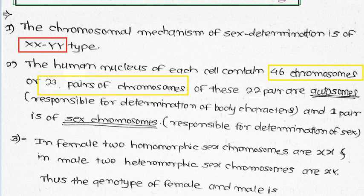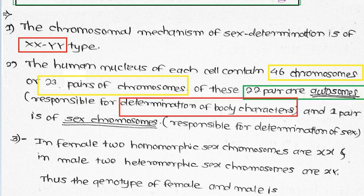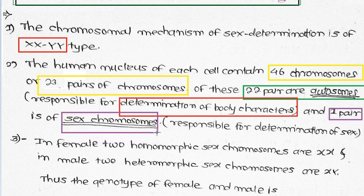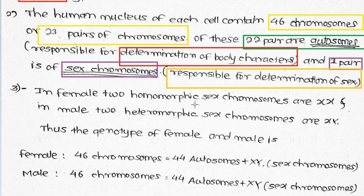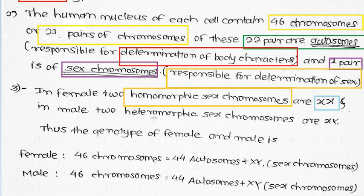So 23 pairs give 46 chromosomes in the somatic cell. In gametes, out of 23 chromosomes, 22 are the autosomes and only one pair is the sex chromosome. The sex chromosome is responsible for the determination of sex. In females, two homomorphic sex chromosomes are present - that is XX, both are the same. In males, heteromorphic chromosomes are present - that is X and Y.